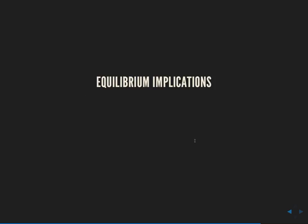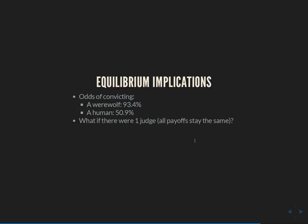That's our equilibrium. The odds of convicting a werewolf under this strategy are 93.4% — slightly improved over the single-judge situation. But what's pretty shocking is that our odds of convicting a human went up to 50.9%. They used to be 10% with just one judge acting by himself. So we took this system designed to require unanimity — to make all three judges agree the accused is guilty — and what actually happens with strategic players is that the odds of convicting the innocent go way up under unanimous rule.